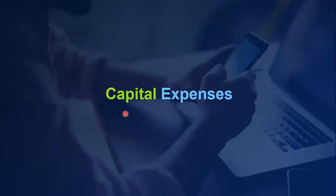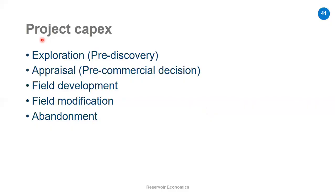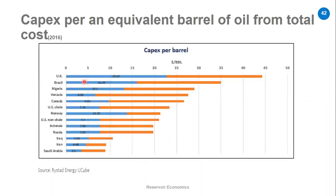We also have capital expenses, CAPEX, which includes exploration wells, appraisal wells, development wells, and facilities. Looking at CAPEX per barrel around the world, the UK has the highest at about $22 per barrel and Saudi Arabia has the lowest at $3.5 per barrel. This cost per barrel difference is largely because the majority of UK fields are offshore — which is more expensive — while the majority of Saudi Arabia's fields are onshore, so the cost per barrel is low.